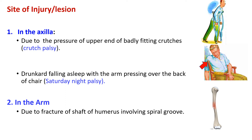The second site of injury is in the arm, and this is usually due to fracture of the shaft of the humerus involving the spiral groove. The radial nerve runs in the spiral groove, which is located on the posterior aspect of the humerus.